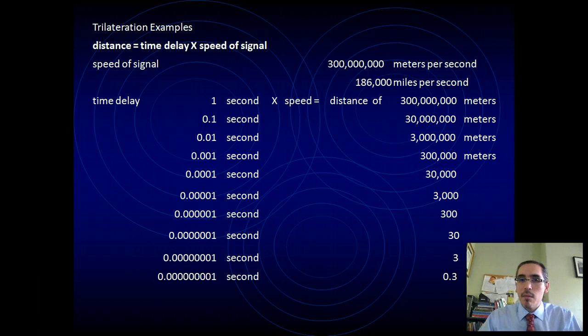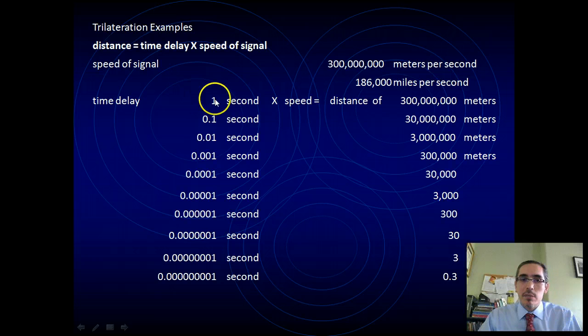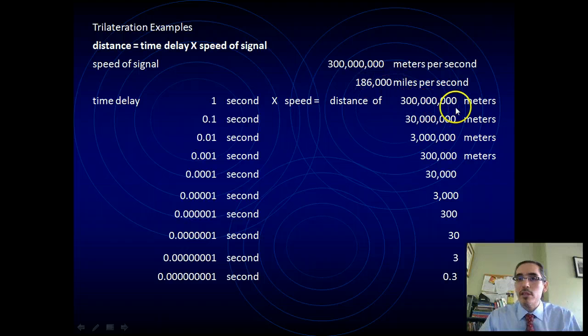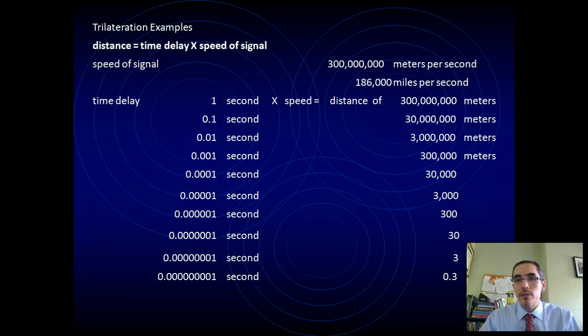What does that mean in a practical level? If the signal takes one second to reach you, you multiply one second times the speed, 300 million meters per second, and it's one times 300 million, essentially. That means that the object that sent the signal would have to be 300 million meters away or 186,000 miles away, which is pretty far. That would put it somewhere between here and halfway to the moon.